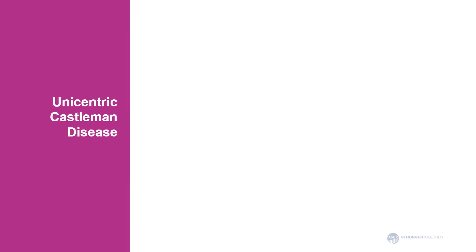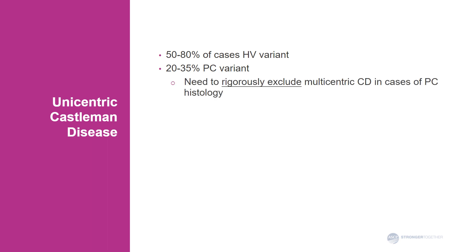When we talk about unicentric Castleman disease, most cases — 50–80% depending on the literature — are of hyaline vascular variant, while the rest are the plasma cell variant. Since plasma cell variant Castleman disease can be unicentric or multicentric, when we as pathologists make this diagnosis, the clinical team has to exclude multicentric Castleman disease.